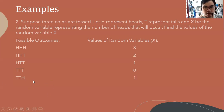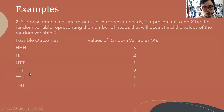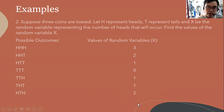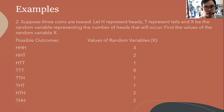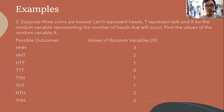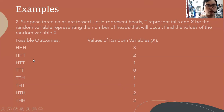For THH, there is only one head chosen among the tossed coins, so the value is one. For TTH, there is also only one head, so the value is one. For HTH, there are two heads, so the value is two. For THH, there are also two heads, so the value is two. The possible values of this random variable are three, two, one, and zero. Since three coins are tossed and each coin has two faces, there are eight possible outcomes.